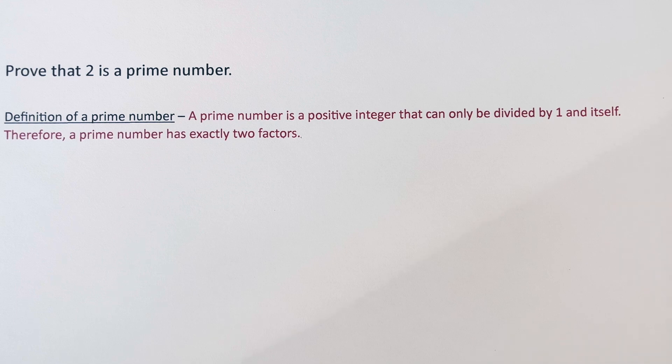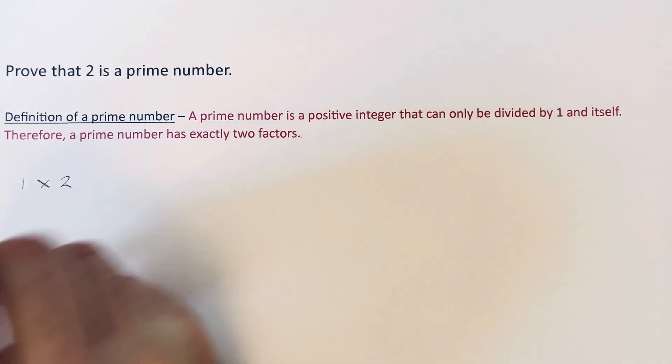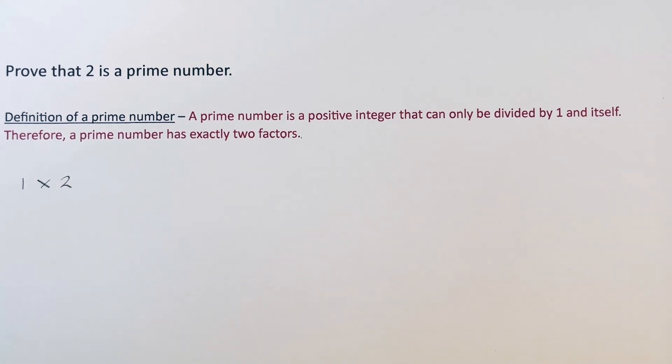So the best way to do this is to find all the factors of 2 by finding the factor pairs. 1 goes into 2 two times, so we know 1 times 2 is 2, and that's about it.